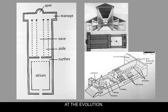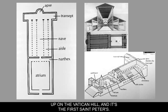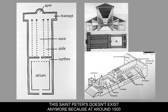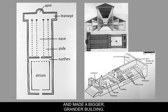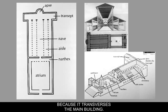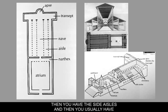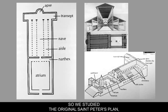When studying architecture, you need to look at the evolution. We're looking at the first St. Peter's, really built around 315–350 CE, built under Constantine's patronage up on the Vatican Hill. This St. Peter's doesn't exist anymore because around 1500 in the Renaissance they reconstructed it and made a bigger, grander building. If you look at this building, the first thing to notice is it looks like the tau plan. It's basically a square building with an apse on one end, and the crossing thing that makes the T at the top is called a transept because it traverses the main building.